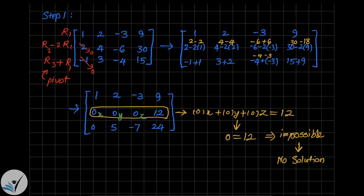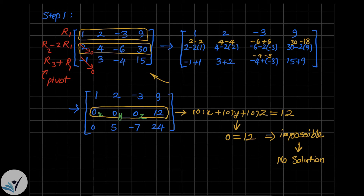In fact, I didn't need to perform step one at all. If you go back to the original matrix and compare the first and second rows, the x, y, and z coefficients in the second row are multiples of those in the first row — except for the constant terms at the end. Whenever that's the case, I recommend inspecting the matrix rows before starting row operations. If one row is a multiple of another, there is either no solution or infinitely many solutions.